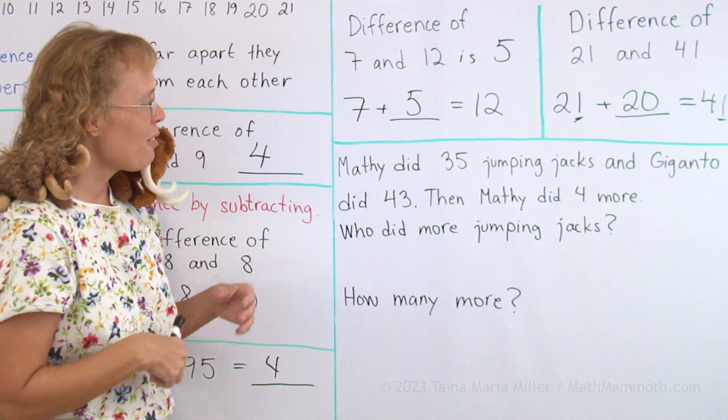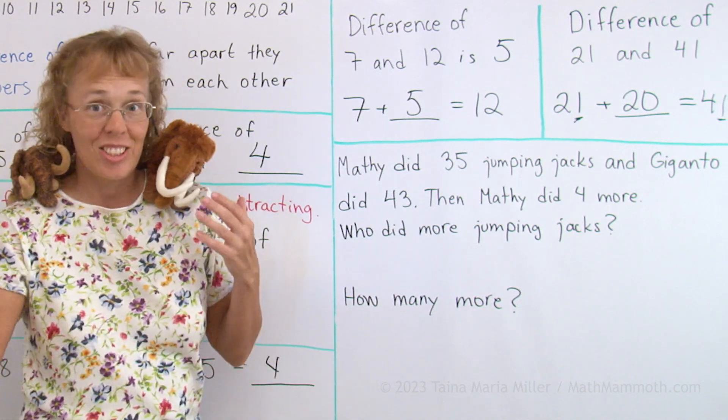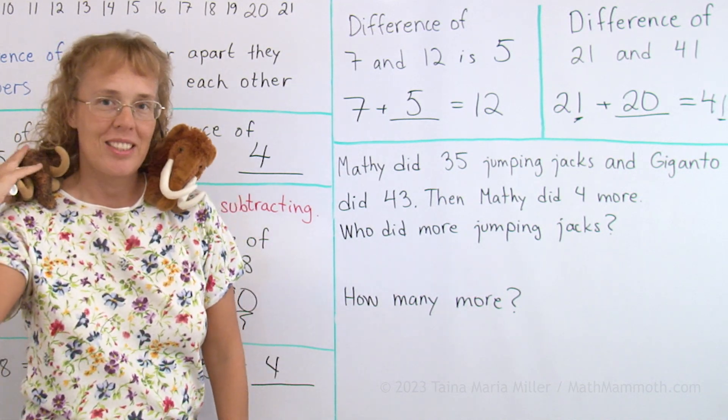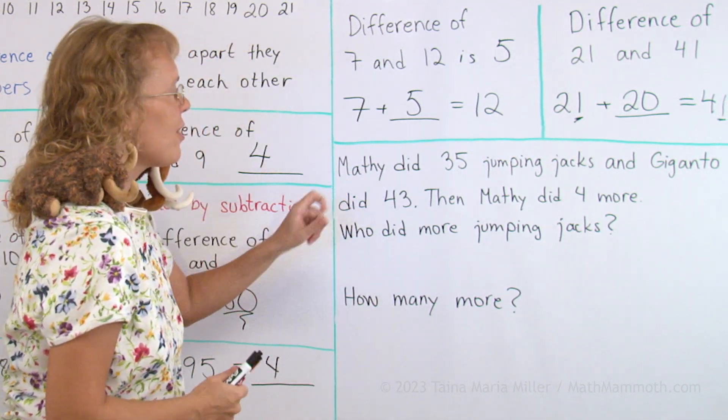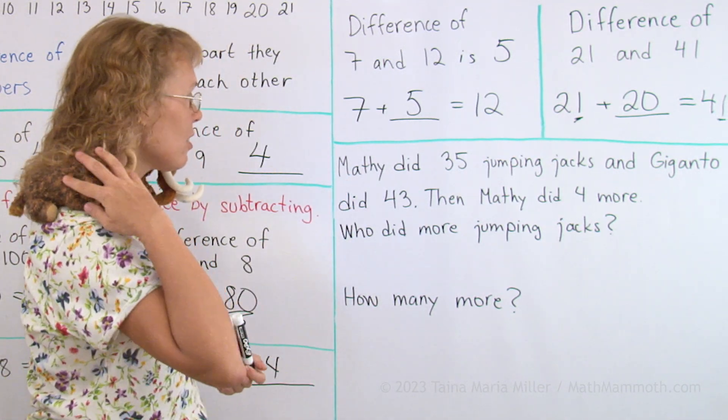And now lastly, we get to solve a word problem with Mathie and Giganto. Giganto is Mathie's cousin, you remember? Okay, Mathie did 35 jumping jacks and Giganto did 43.